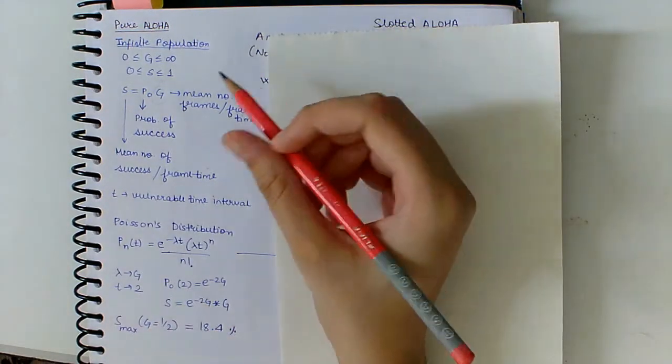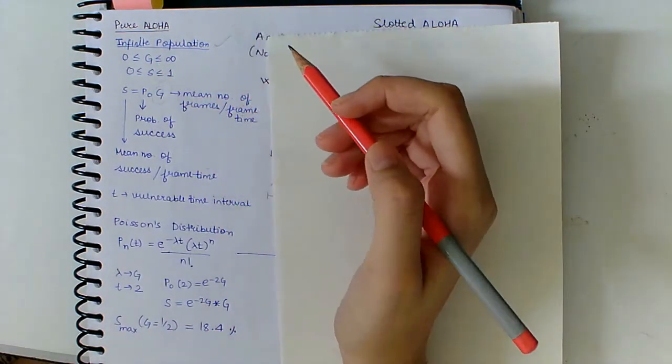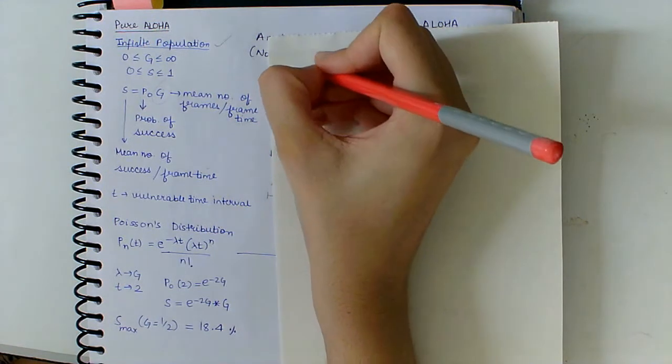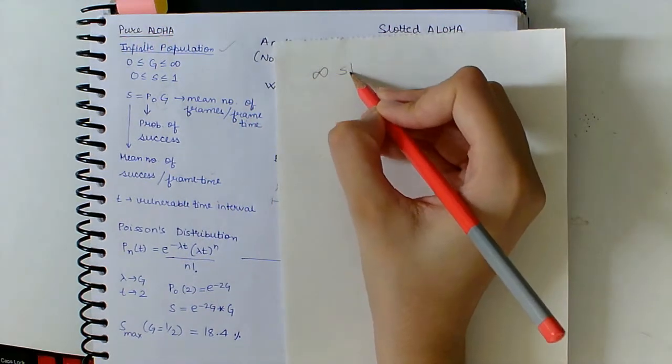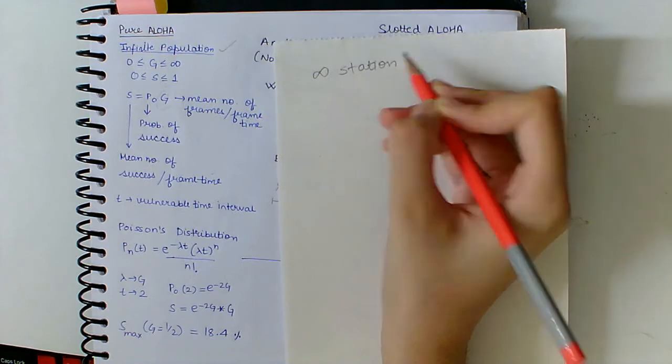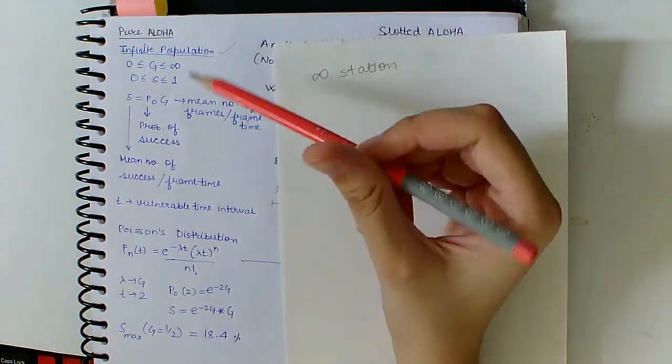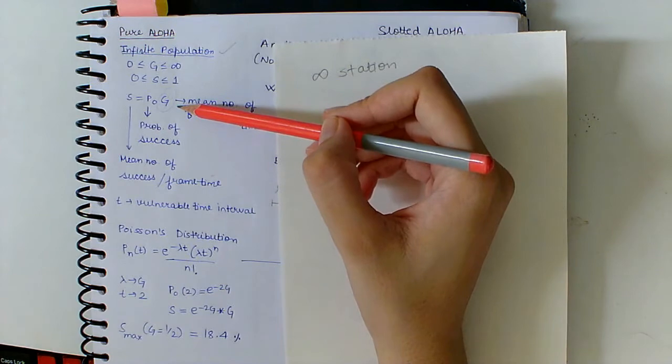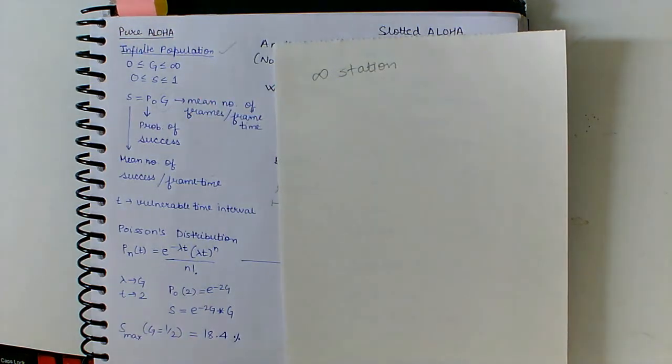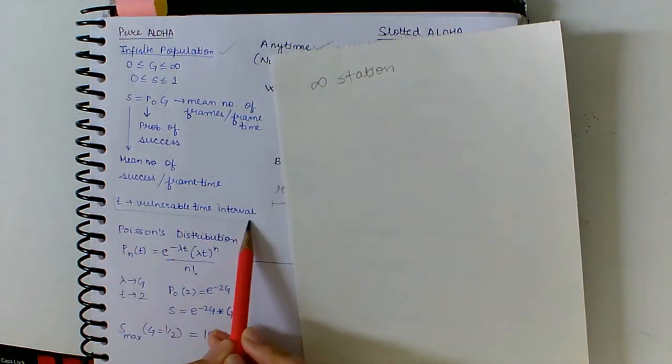In case of Pure ALOHA, we are taking infinite population, so we have infinitely many stations which want to transmit a fixed number of frames, and the mean number of such frames is represented by G.